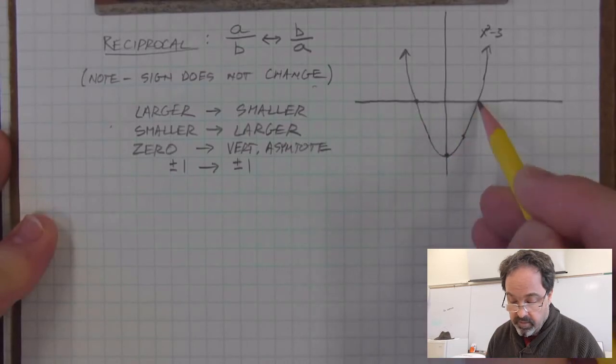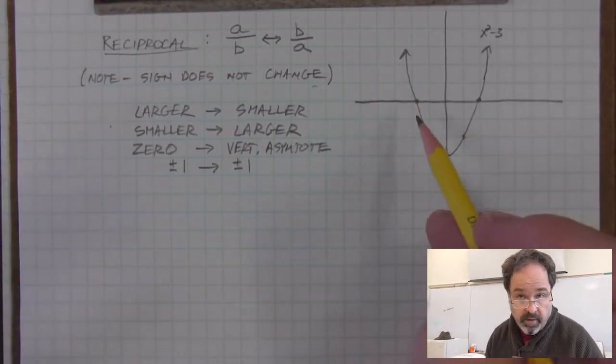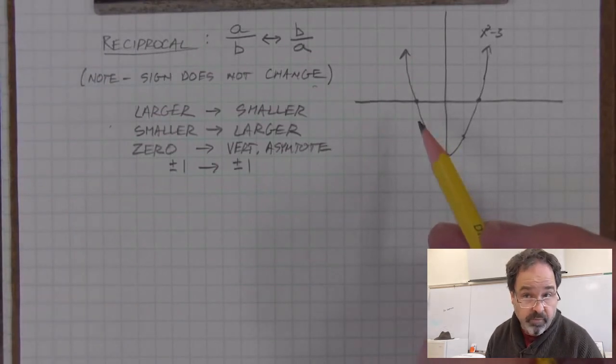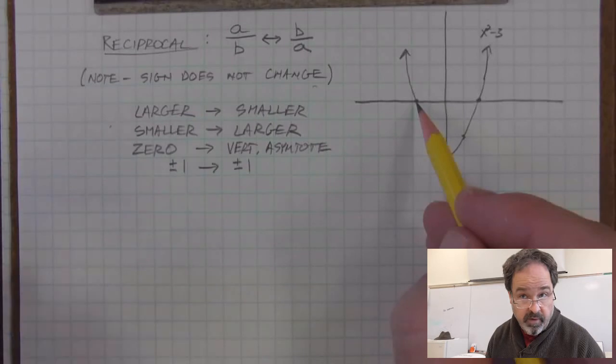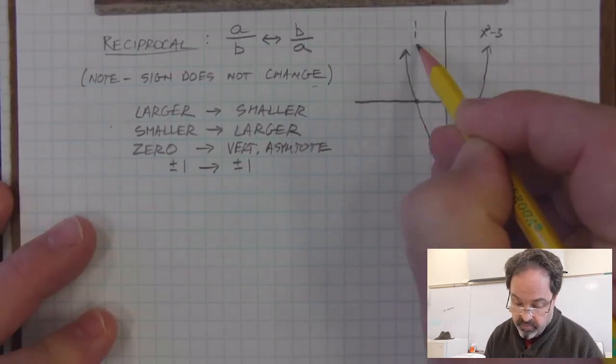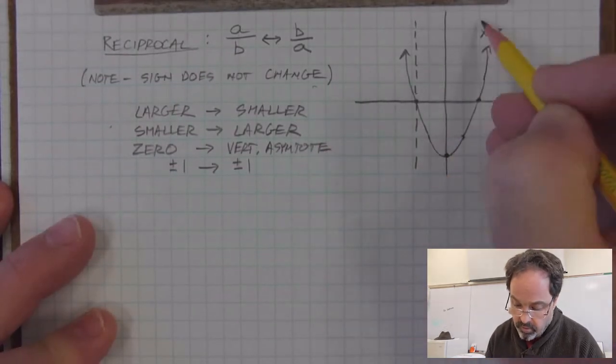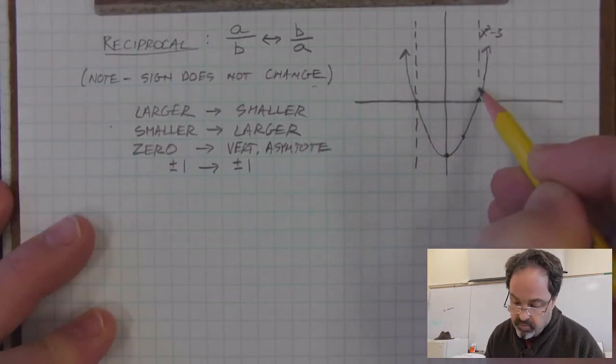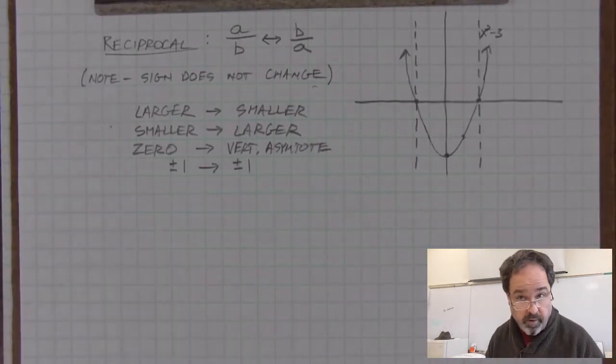First, I'm going to look at the zeros or the x-intercepts of my graph of my parabola. Remember that we can't take the reciprocal of 0. 1 over 0 is undefined. What that means in a function is that it's a vertical asymptote. And I'm going to draw vertical dotted lines to suggest that is where the vertical asymptotes of this new graph are going to be.